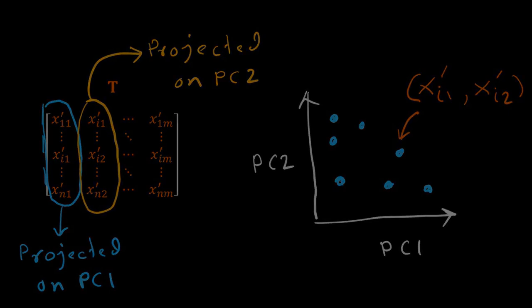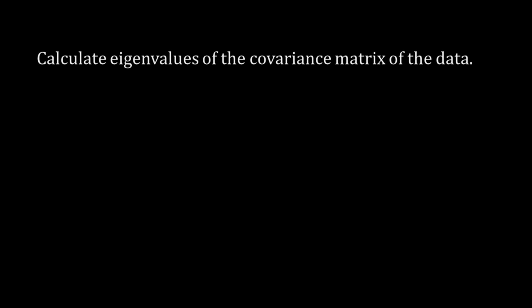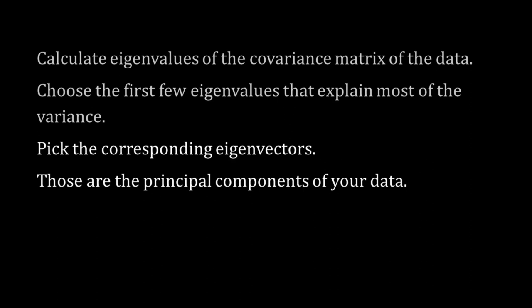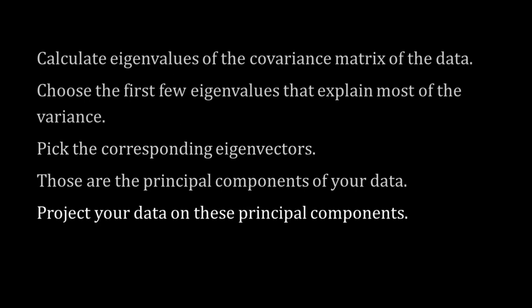That's all — it is simple. Calculate the eigenvalues of the covariance matrix of your data, choose the first few eigenvalues that explain most of the variance, and pick the corresponding eigenvectors — those are the principal components. Then project your data on these principal components. With this, the video on the math of PCA is over. Thank you for learning with me.